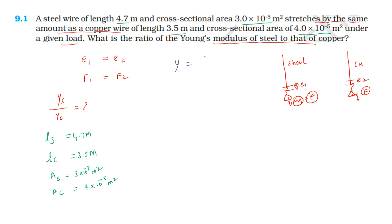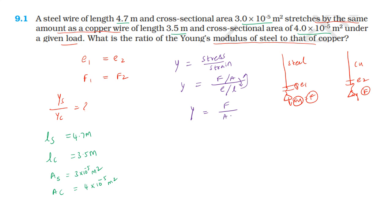Young's modulus equals stress divided by strain. Stress = F/A, strain = ΔL/L, so Young's modulus E = F·L / (A·ΔL). Since both wires have the same force F and the same elongation ΔL, the ratio E_steel / E_copper = (L_s / A_s) / (L_c / A_c).